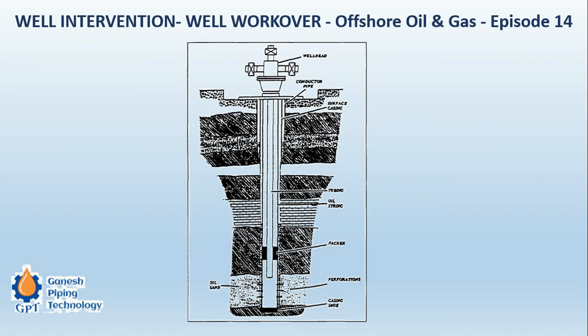The second category is reservoir-related activities, which apply when the pressure of the reservoir is not sufficient. In that case, hydrocarbon production is automatically reduced because there is not enough pressure to bring out the well fluid. Well workover constitutes coil tubing, snubbing, and wireline operations — all three together are called well workover activities. Separate videos dedicated to each of these three operations are available on the channel.